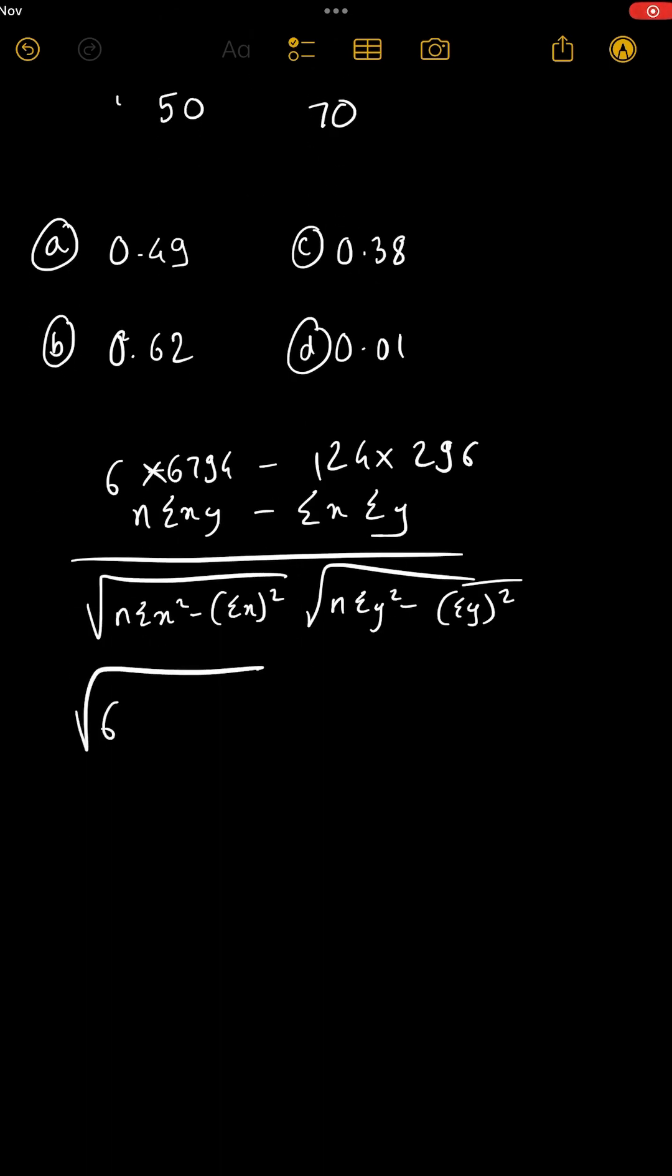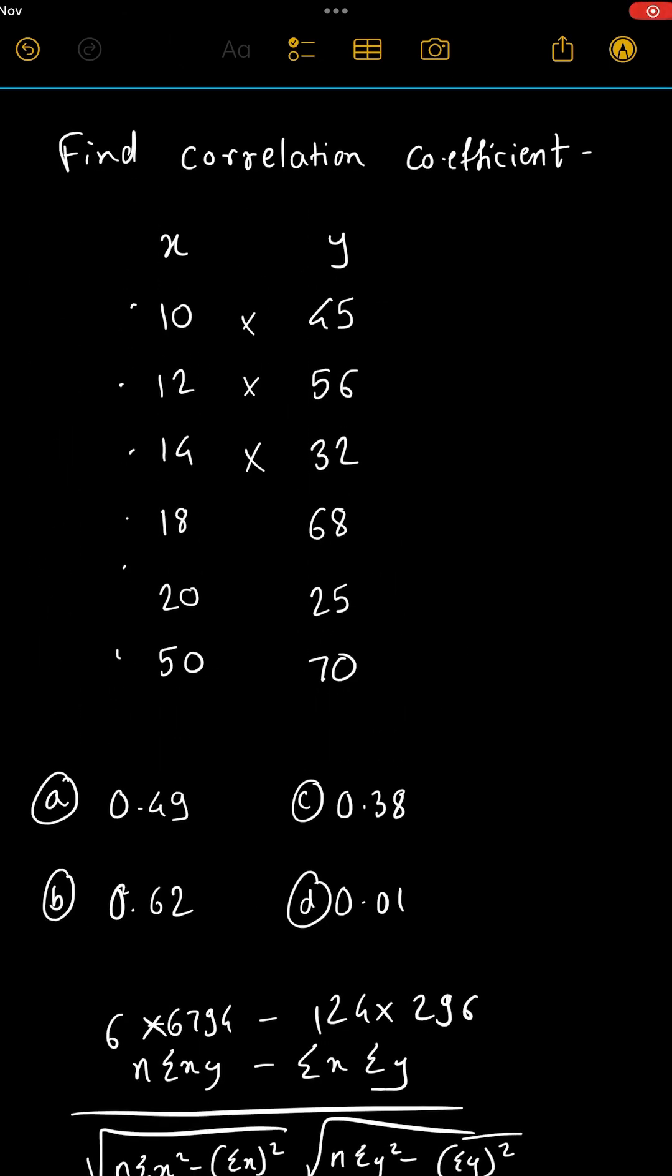Now denominator, n is 6, so summation x square. We'll have to calculate that. x square is 10 square, 12 square and so on. How do we calculate square on the calculator? 10 into equal to, that gives you square, m plus, 12 into equal to m plus, 14 into equal to m plus, and so on, do it for all the values.